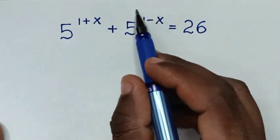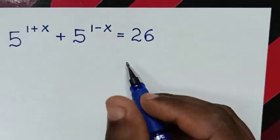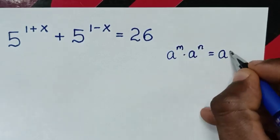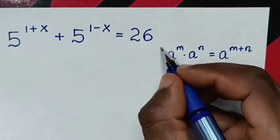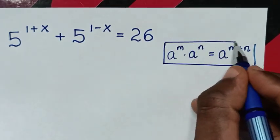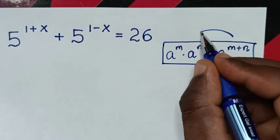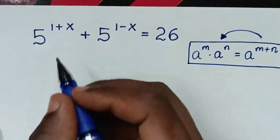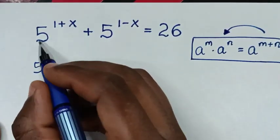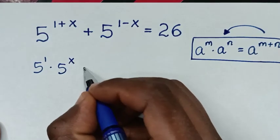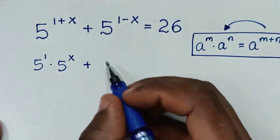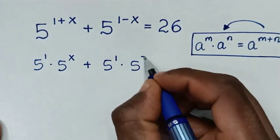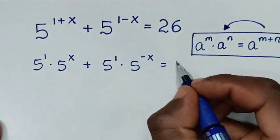In the first step, from this exponent form we will apply the exponential rule, which is: a power m times a power n is equal to a power (m plus n). So we will change 5 power (1+x) into 5 power 1 times 5 power x, and 5 power (1-x) into 5 power 1 times 5 power negative x, is equal to 26.